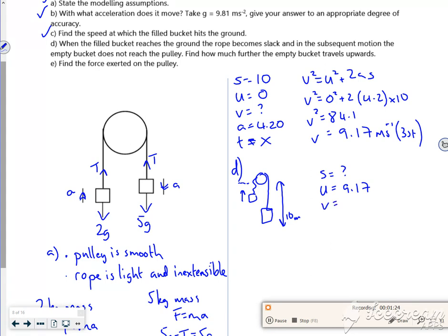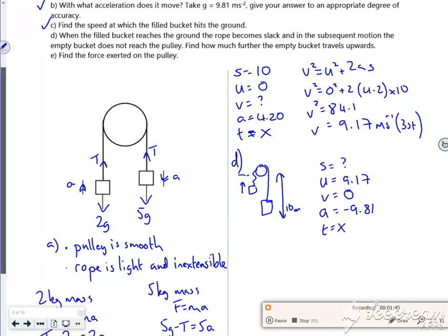Now then, how much higher does it go? So it gets to the point where it stops. So V is 0. Now because my string is slack, it's just acceleration due to gravity. So that's 9.81. But it's fighting gravity. And T, I'm not bothered about it. So I want the one without T.